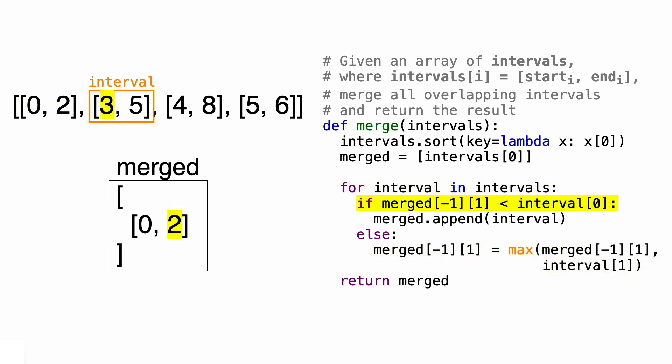Again, let's compare the ending value of the first interval with the starting value of the second interval. This time, 2 is less than 3, which means there is no overlap, so we'll just go ahead and append the second interval, which is 3, 5.